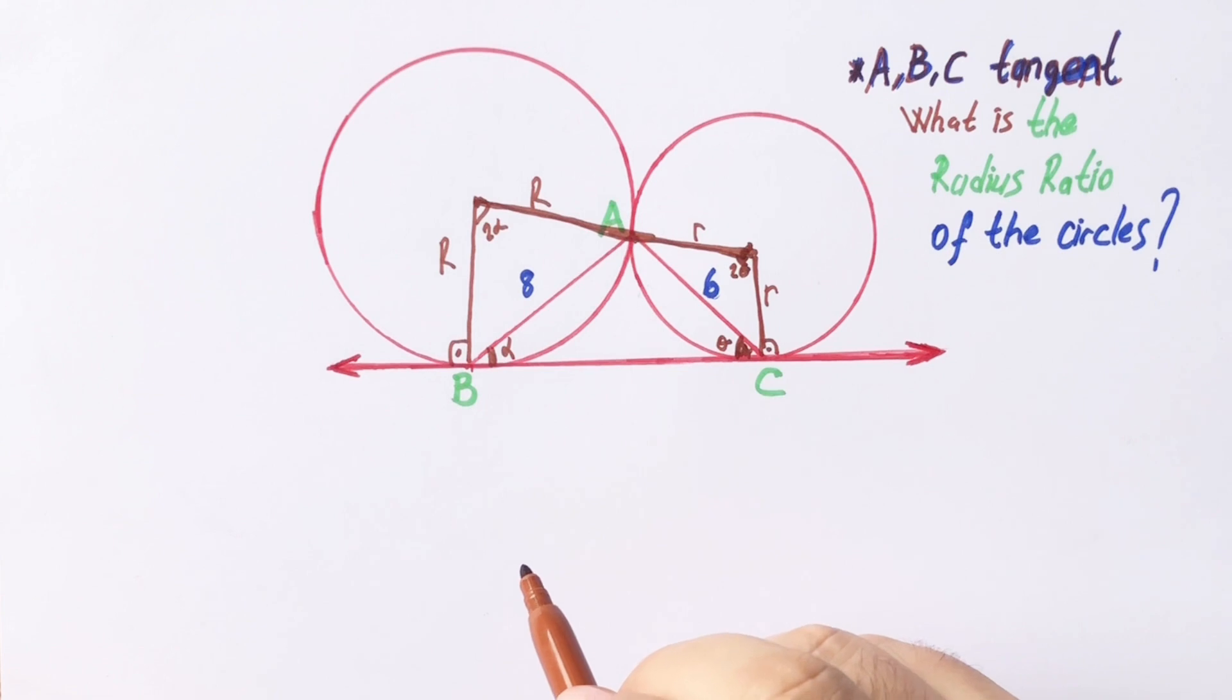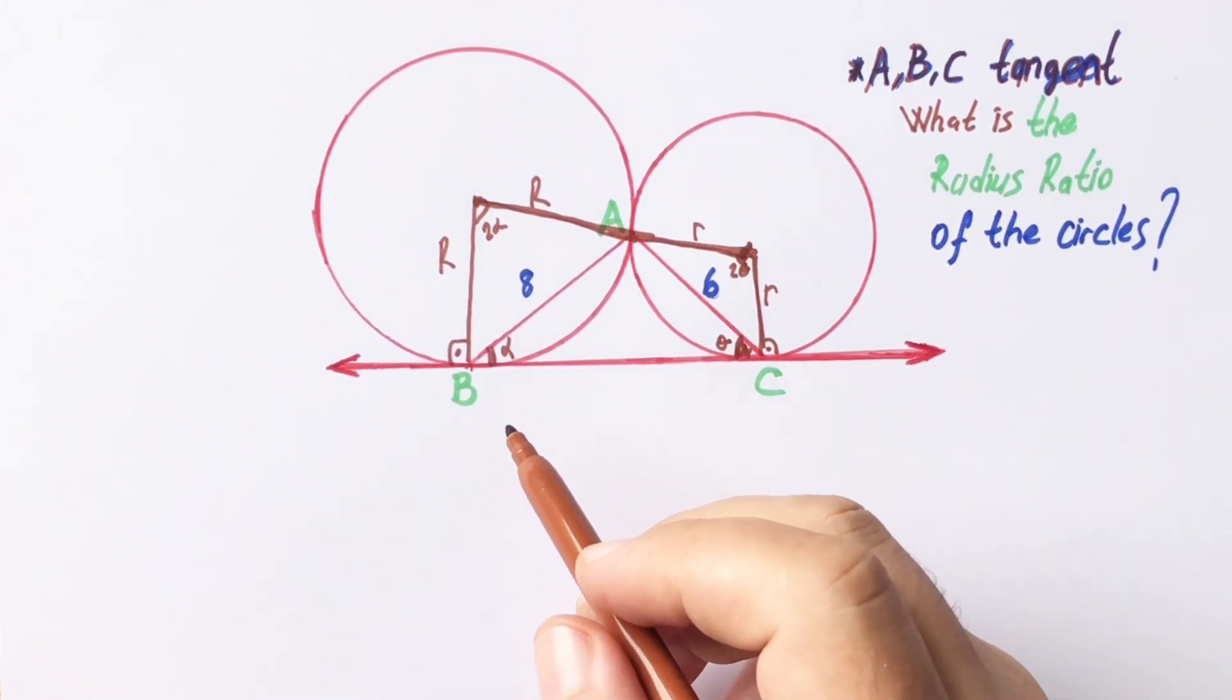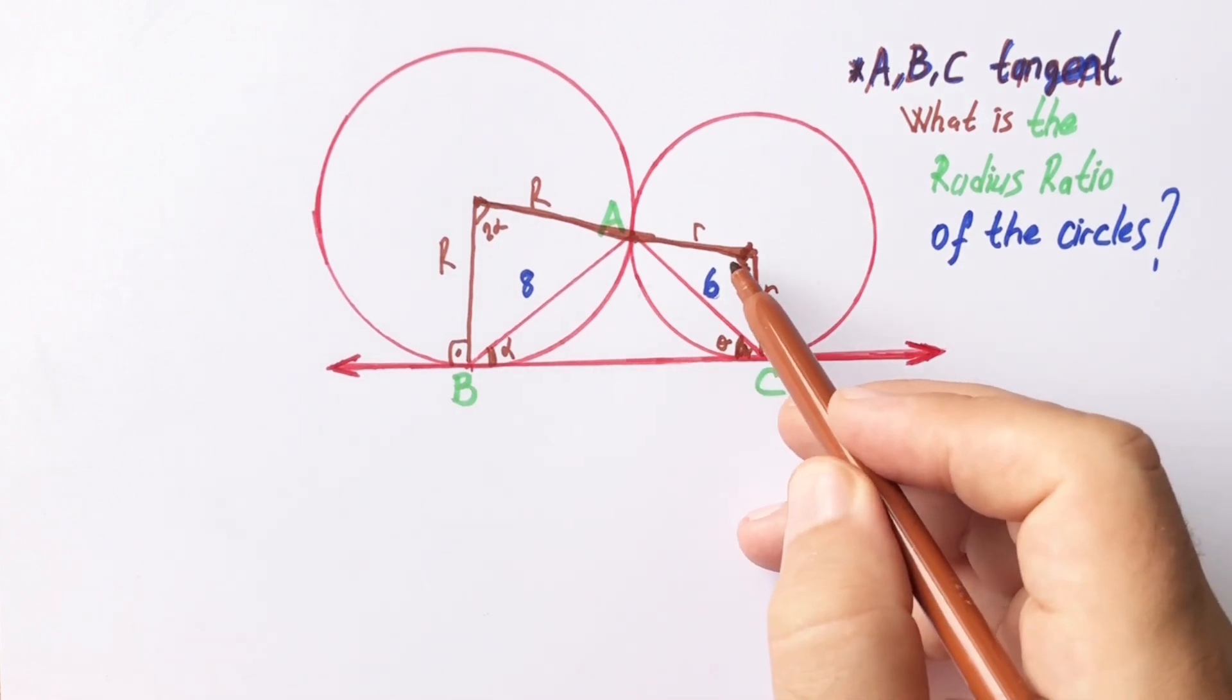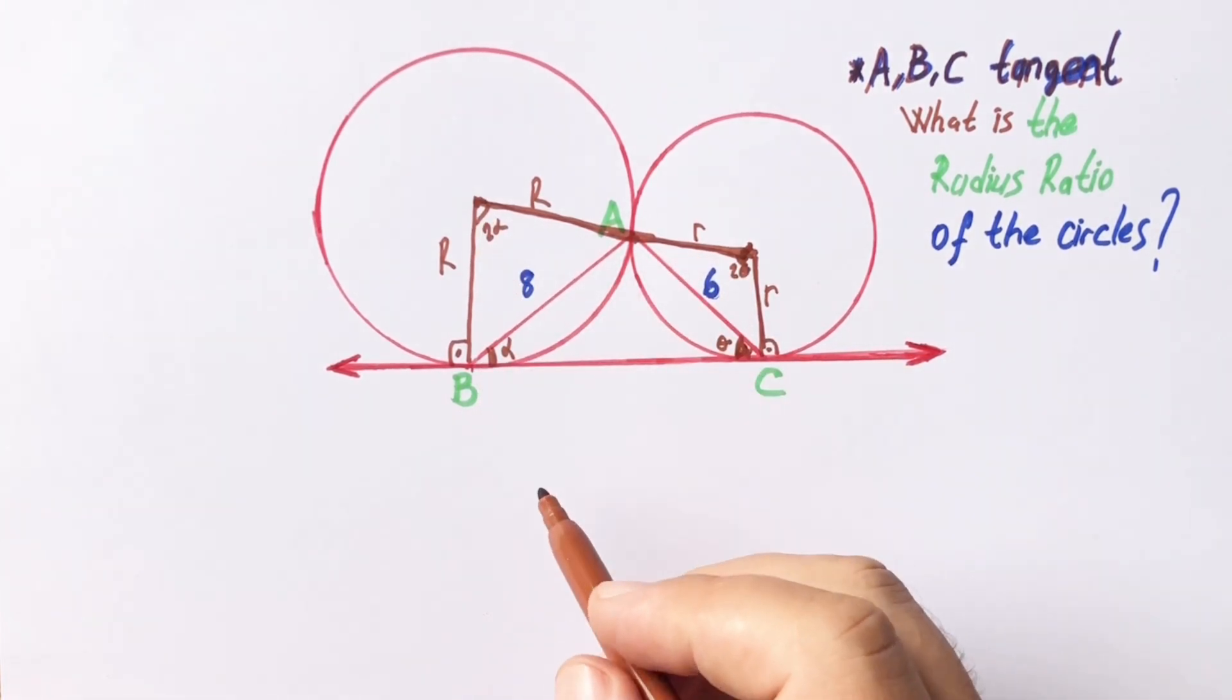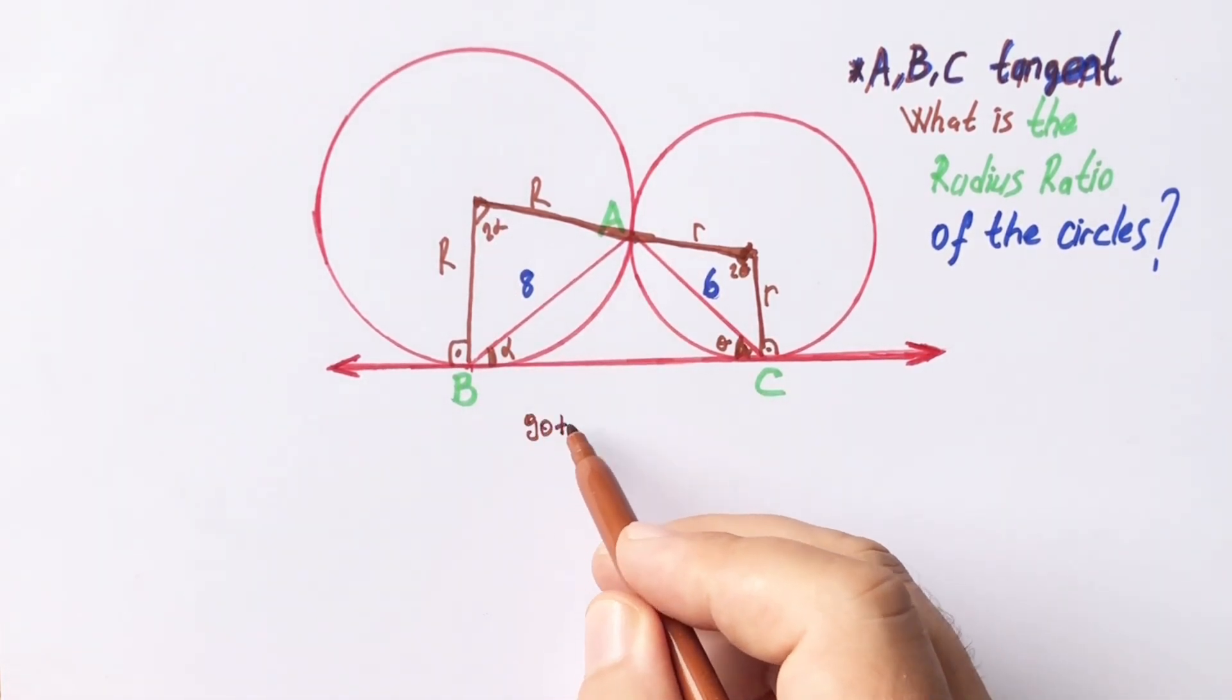If you notice, we have one quadrilateral. You know that the sum of the quadrilateral interior angles is 360 degrees.